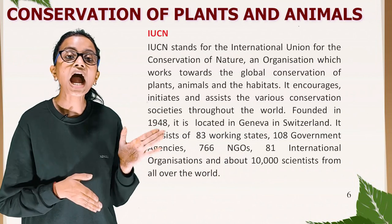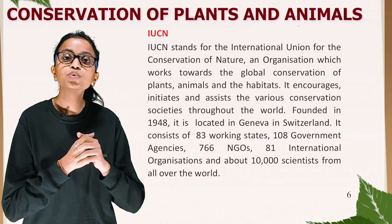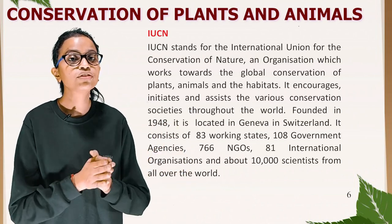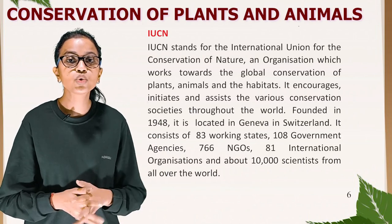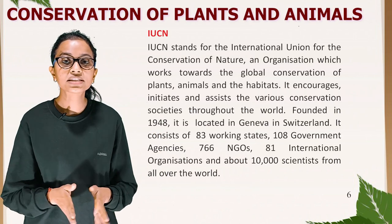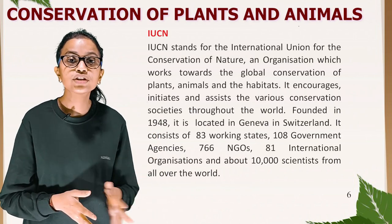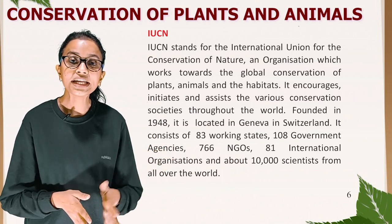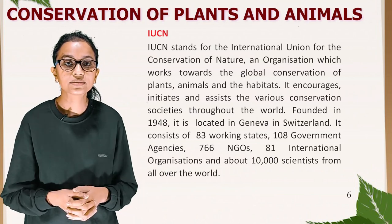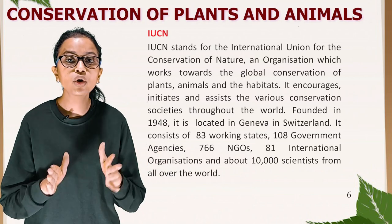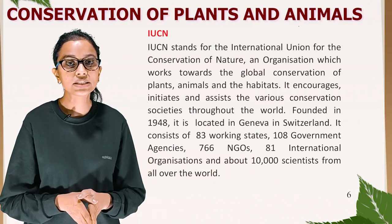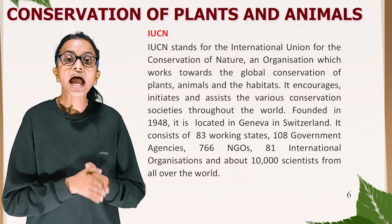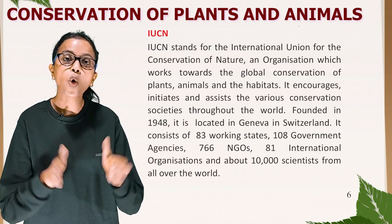IUCN stands for the International Union for the Conservation of Nature. It is an organization that works towards the global conservation of plants, animals and their habitats. It encourages, initiates and assists various conservation societies throughout the world. Founded in 1948, it is located in Geneva, Switzerland. It consists of 83 working states, 108 government agencies, 766 NGOs, 81 international organizations and about 10,000 scientists from all over the world.